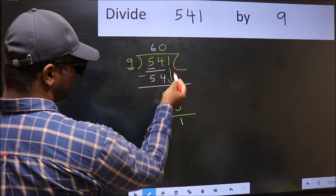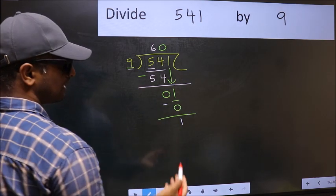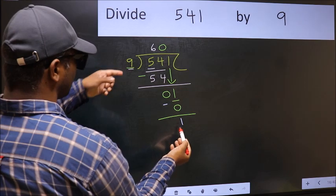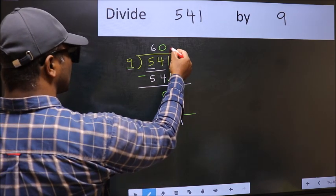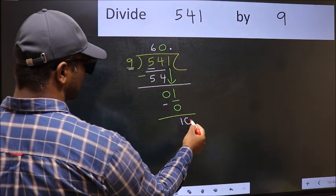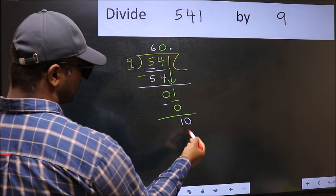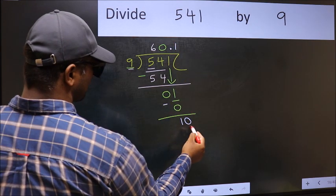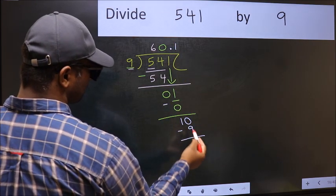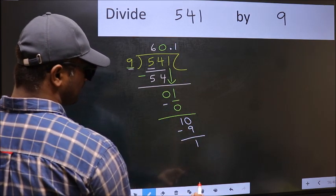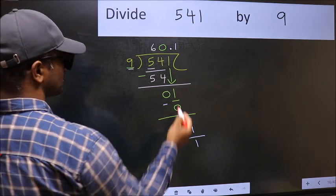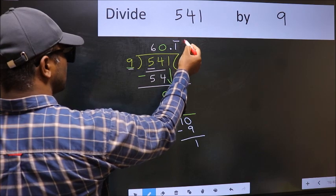Over here, we did not bring any number down. And 1 is smaller than 9. So now you can put dot and take 0. So 10. A number close to 10 in 9 table is 9 once 9. Now you should subtract. We get 1. We got 1 again. That means we get bar on this number.